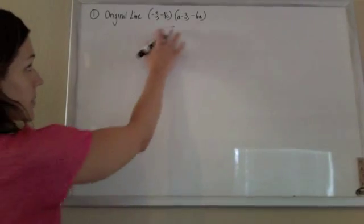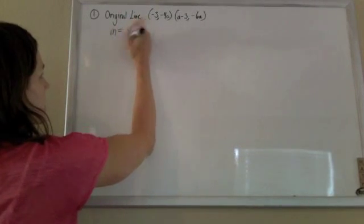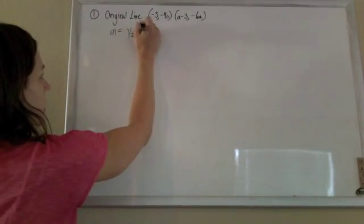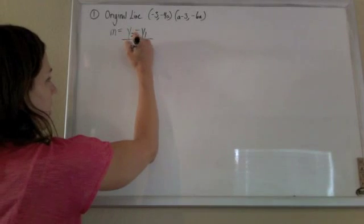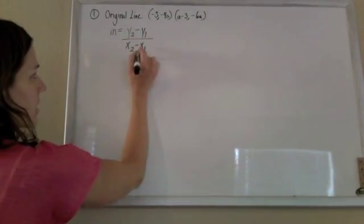Okay, so let's find out some stuff about our original line. We want to find its slope using our formula m equals y2 minus y1 over x2 minus x1, just the change in y over the change in x.